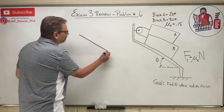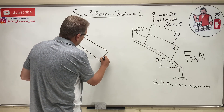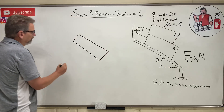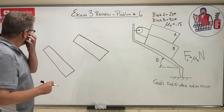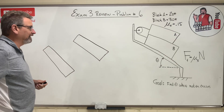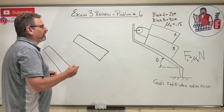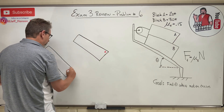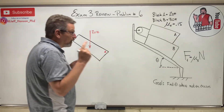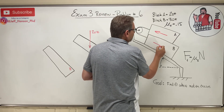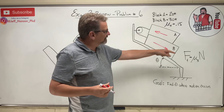I've got two free bodies to draw. Here's block A and here's block B. They tell us that block A weighs 20 pounds. I'm going to assume that block A is going to slide this way and block B is going to slide that way. That's my assumption — I don't know if I'm right or not, but this guy's heavier so I think he's going to slide down and the other one's going to slide up.